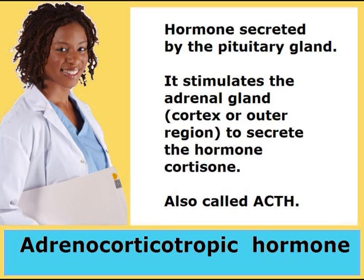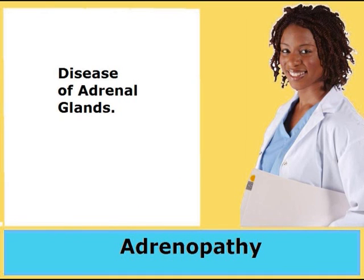Adrenocorticotropic hormone: Hormone secreted by the pituitary gland. It stimulates the adrenal gland — the cortex or outer region — to secrete the hormone cortisone. Also called ACTH. Adrenopathy: Disease of adrenal glands.